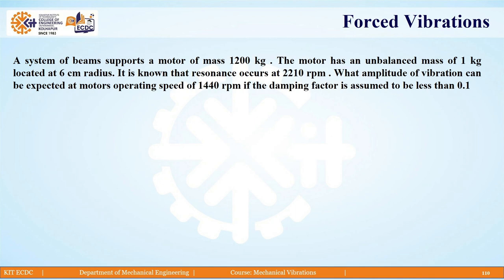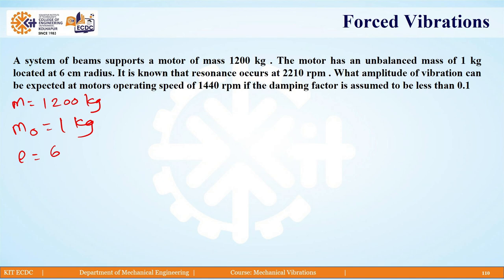The first numerical: a system of beam supports a motor of mass 1200 kg. The motor has an unbalanced mass M0 of 1 kg, which is located at an eccentricity radius E of 6 centimeters. It is known that resonance occurs at 2210 RPM.